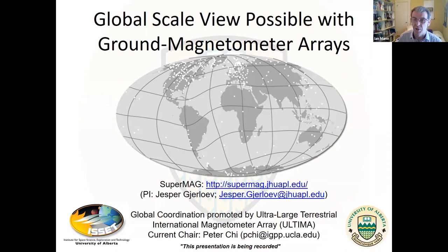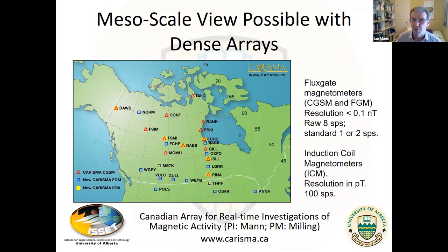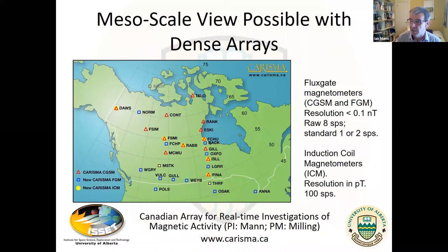The ULTIMA consortium — a collection of partnering ground magnetometer PIs currently chaired by Peter Chi — has been trying to promote the philosophy of bringing the arrays closer together. I'm going to use one specific array for some of my examples: the CARISMA array, of which I've been the PI since 2003. This is a network in western Canada spanning from the polar cap all the way down through the auroral zone and the plasmasphere, currently with some stations in the northern US.